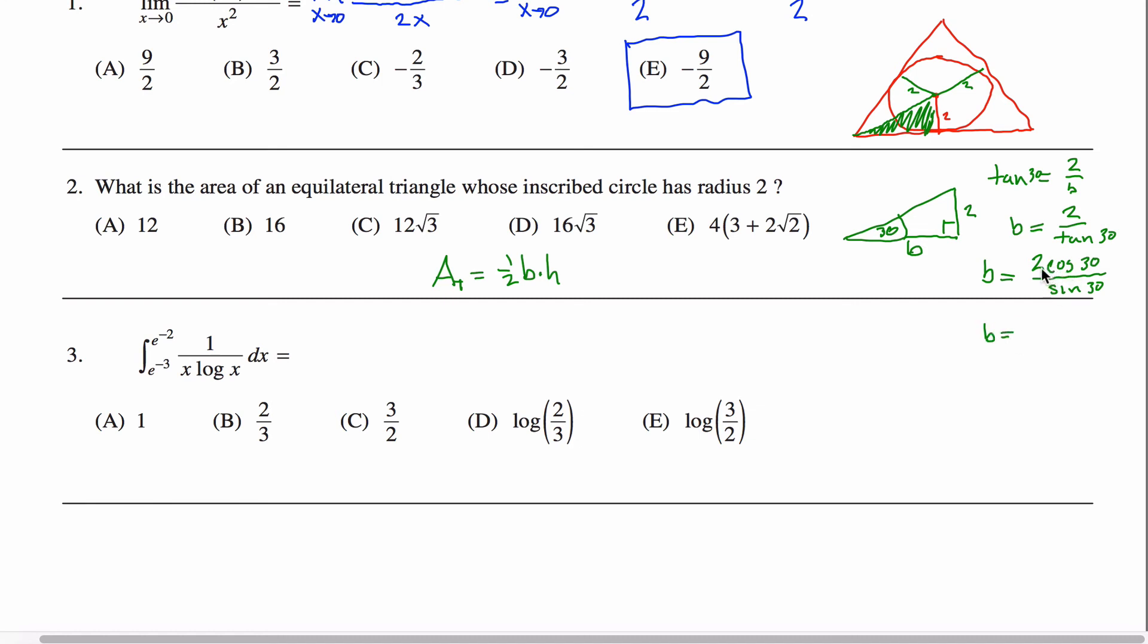So this is two times root three over two. This two and this two cancel out. I'm left with root three over one half, AKA two root three.